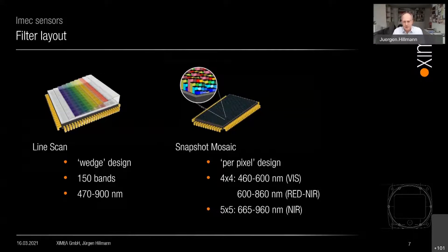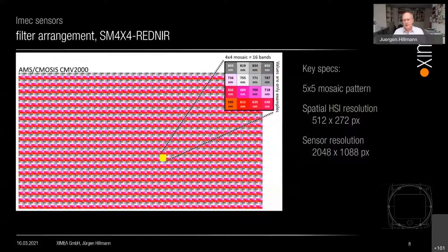With the snapshot sensor, one image delivers a complete hyperspectral imaging data cube. Three different standard sensors are available: a four-by-four pattern from 460 to 600 nanometers in visible light, another four-by-four from 600 to 860 nanometers covering red to near-infrared, and a new five-by-five sensor from 665 to 960 nanometers. This pattern is repeated over the complete sensor surface. The trade-off is reduced spatial resolution, since this is a two-megapixel sensor split across both spatial directions.